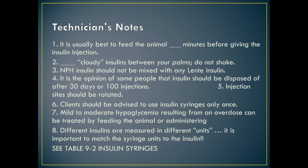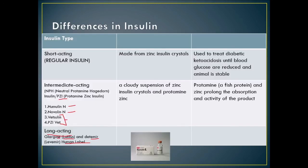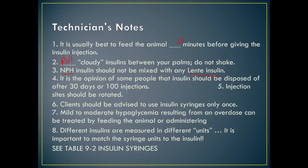Injection sites should be rotated. Clients should be advised to use insulin syringes only once. Mild to moderate hypoglycemia from overdose can be treated by feeding the animal or administering glucose, dextrose, or corn syrup. Different insulins are measured in different units, and you must match the syringe units to the insulin. Table 9-2 in your book has the insulin syringes.